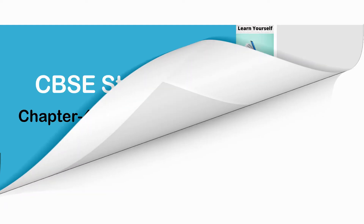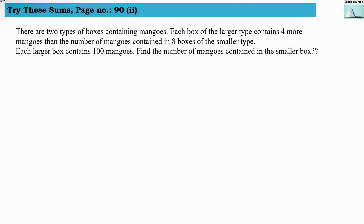Welcome to Learn Yourself. Try this sum: page number 90, second numerical. There are two types of boxes containing mangoes. Each box of the larger type contains four more mangoes than the number of mangoes contained in eight boxes of the smaller type.